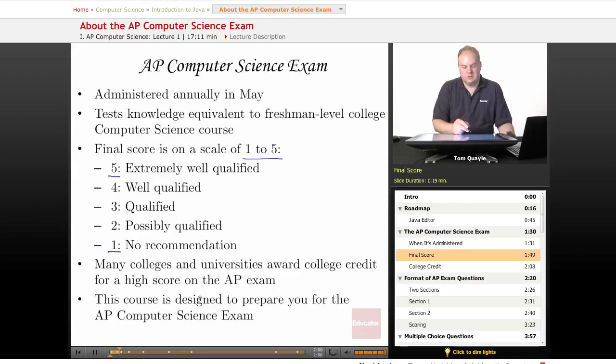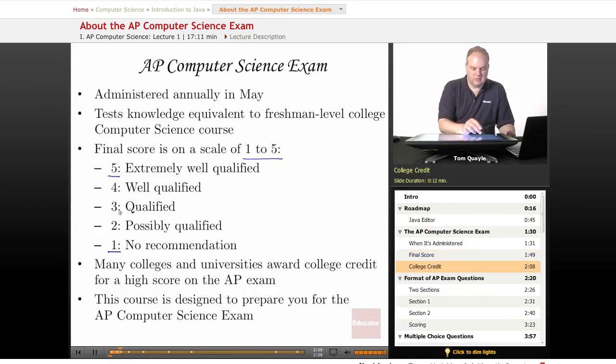Many colleges and universities award college credit for a high score on the AP exam. Generally you're going to need to get either a five or four to get college credit. Some colleges and universities may give credit for a three as well. This course is designed to prepare you for the AP Computer Science exam.